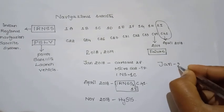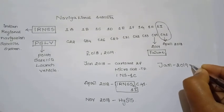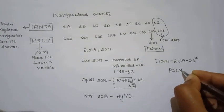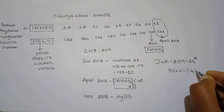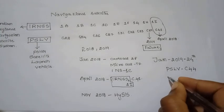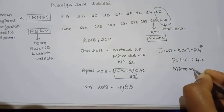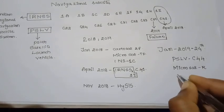January 2019: ISRO's first mission in 2019, PSLV-C44. Satellites are Microsat-R and KalamSat.